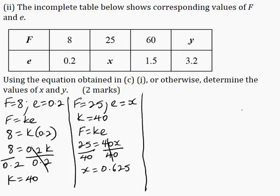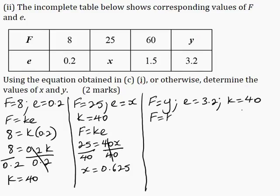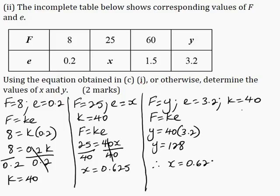Next, calculate the value of Y. When F is equal to Y and E is equal to 3.2, with K equal to 40, substituting into F equals KE gives Y is equal to 40 multiplied by 3.2. Y is equal to 128. Therefore, X is equal to 0.625 and Y is equal to 128.